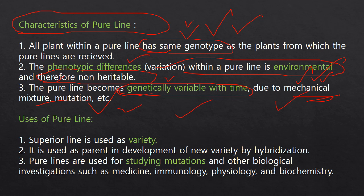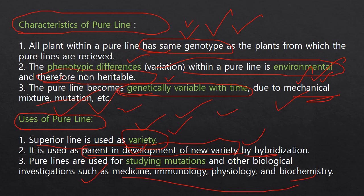The uses of pure line selection are: first, the superior pure line is released as a variety. Second, it is also used as a parent in the development of a new variety by hybridization. Third, it is used for studying mutations and other biological investigations such as medicine, immunology, physiology, and biochemistry.